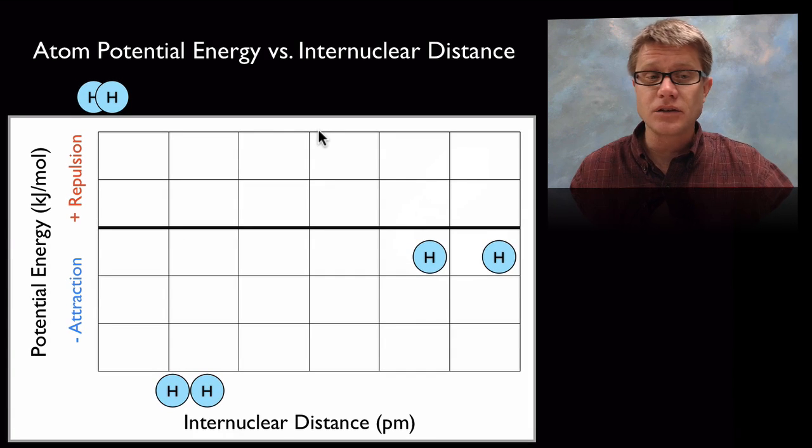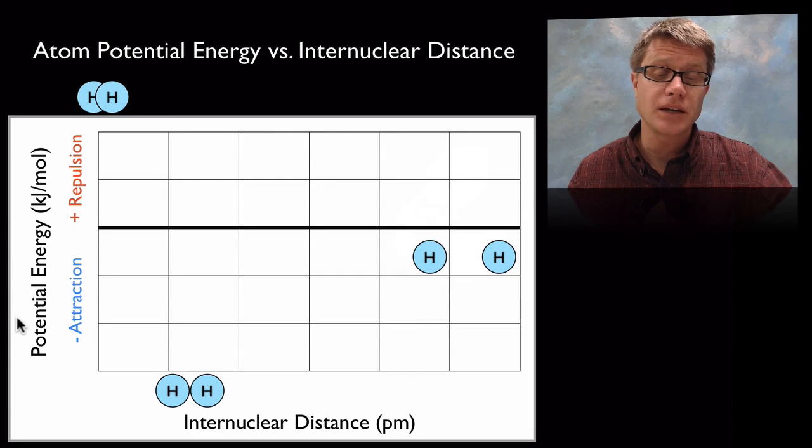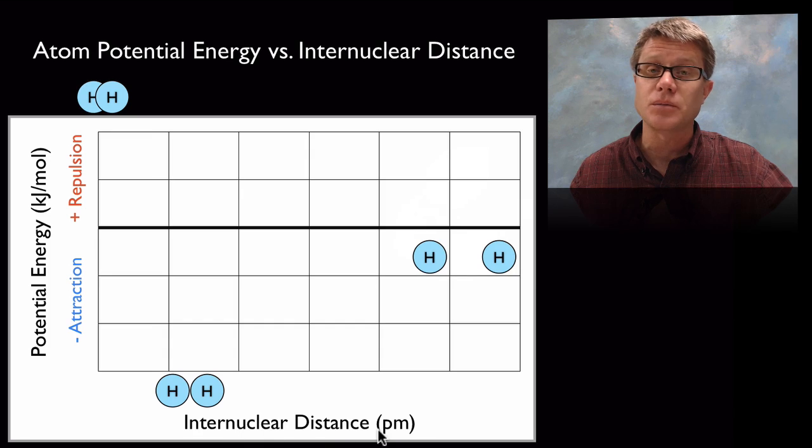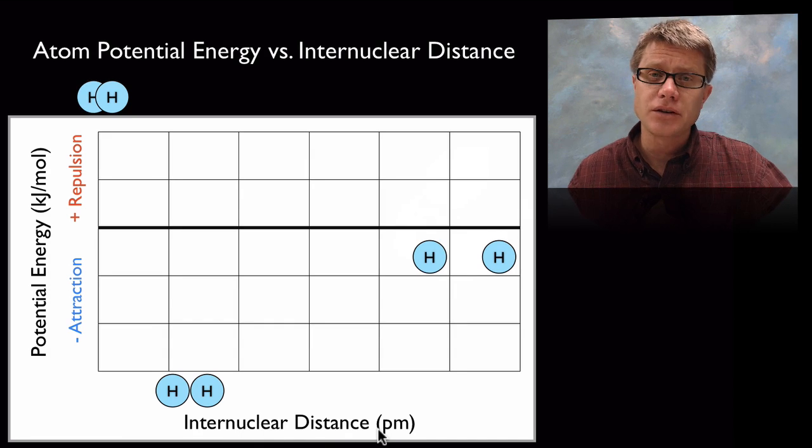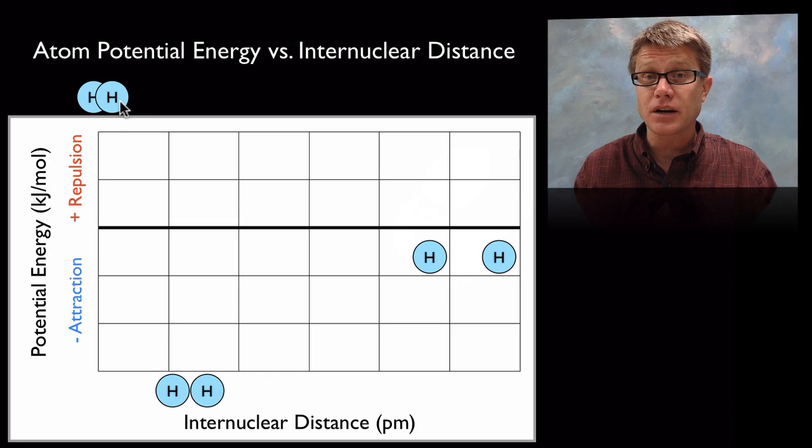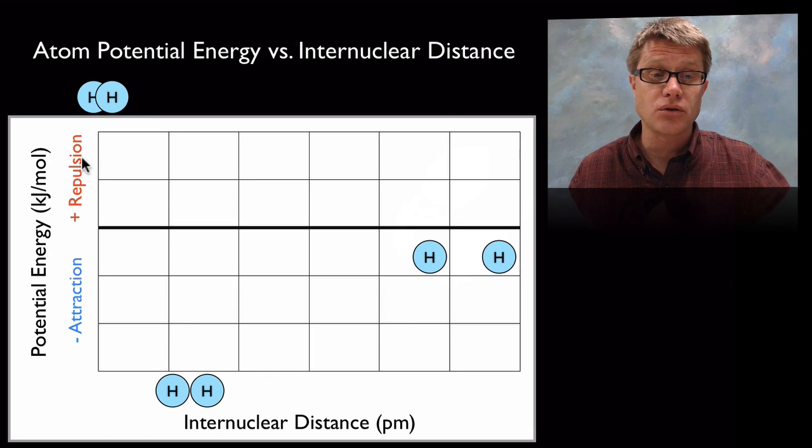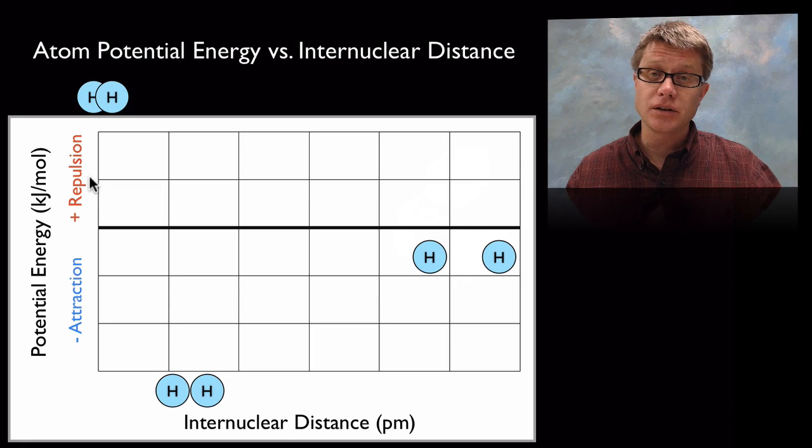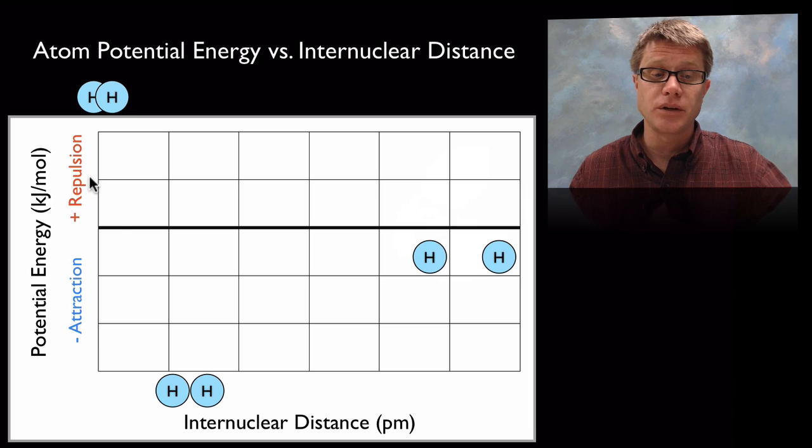Now we can study these using a graph like this, where we put potential energy on one side and then we put internuclear distance between the two. So let's start with hydrogen or H2. If we have two hydrogen atoms together, as we move them really close together they're going to want to push on each other. In other words there's going to be repulsion.